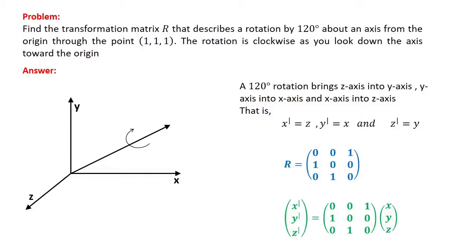The rotation matrix corresponds to a 120-degree rotation about the axis (1, 1, 1), which is symmetric with x, y, and z. If you rotate 360 degrees about this axis, x, y, and z return to the same position.